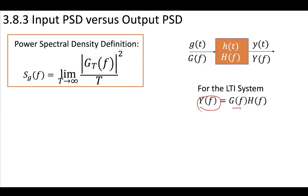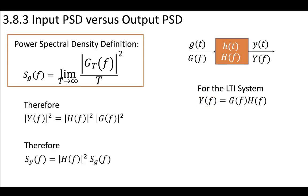because of this definition, if you have the output squared, that equals the input squared multiplied by the transfer function. Similar to the energy spectral density, we can say that the power spectral density of the input function multiplied by the transfer function squared is equal to the power spectral density at the output.